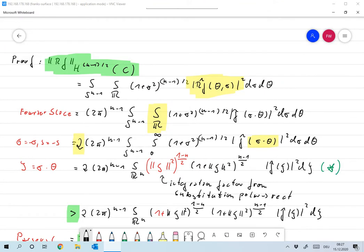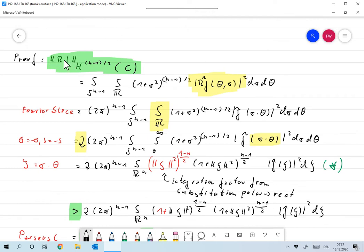So we start out from the Radon transform. We take the H^(n-1)/2 norm on the cylinder, because Rf is a data function. Now this is the same as the integral of the unit circle, (1 + sigma^2)^((n-1)/2) times Rf hat of theta and sigma squared d sigma d theta, and that's just according to the definition of H^(n-1)/2.